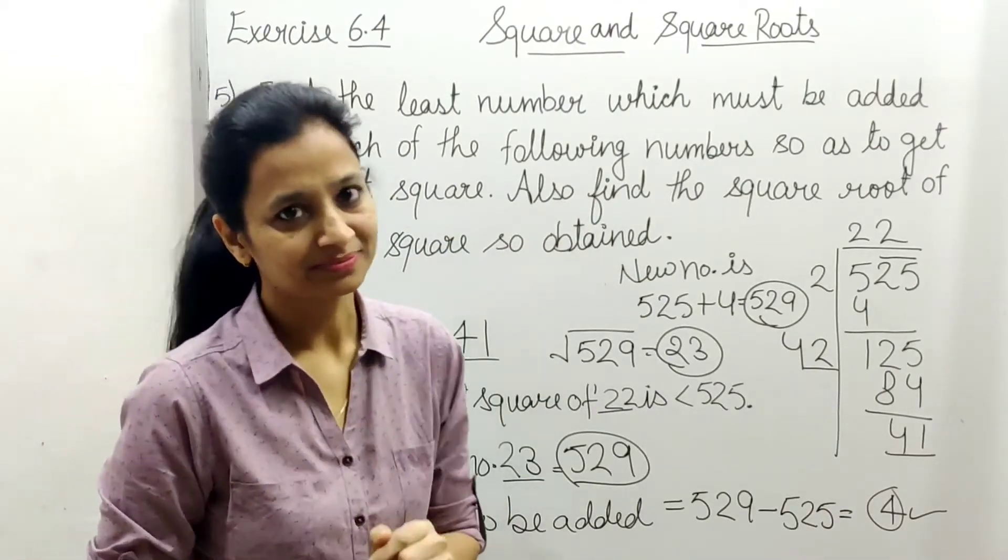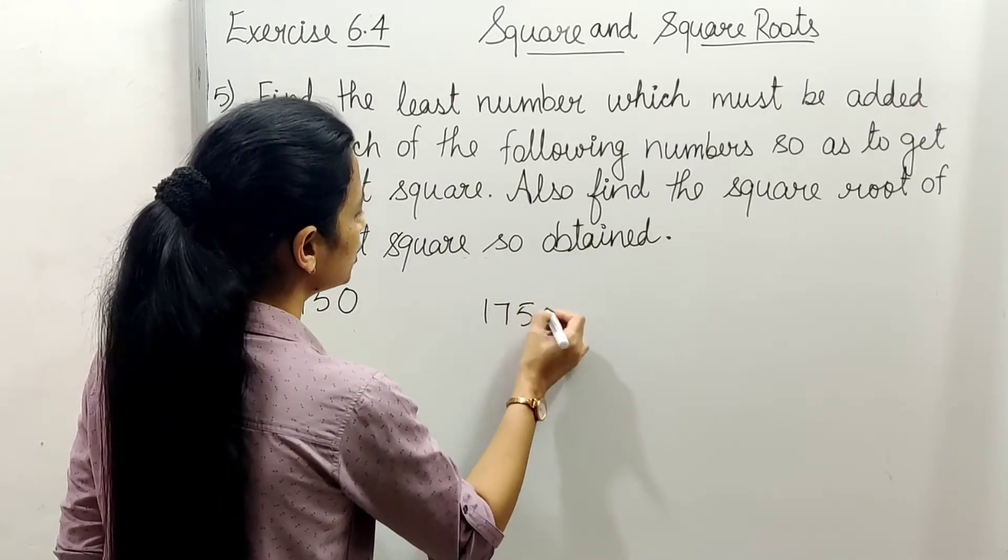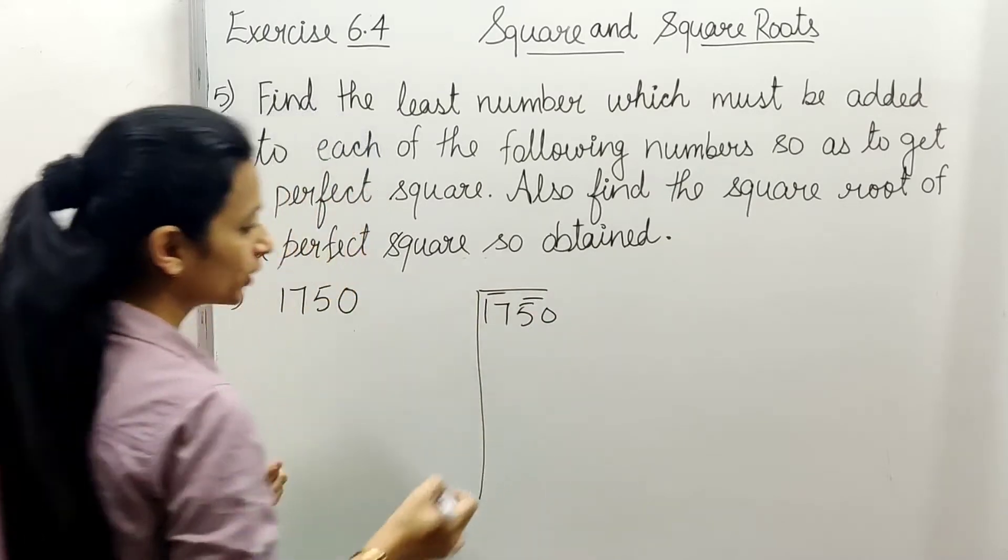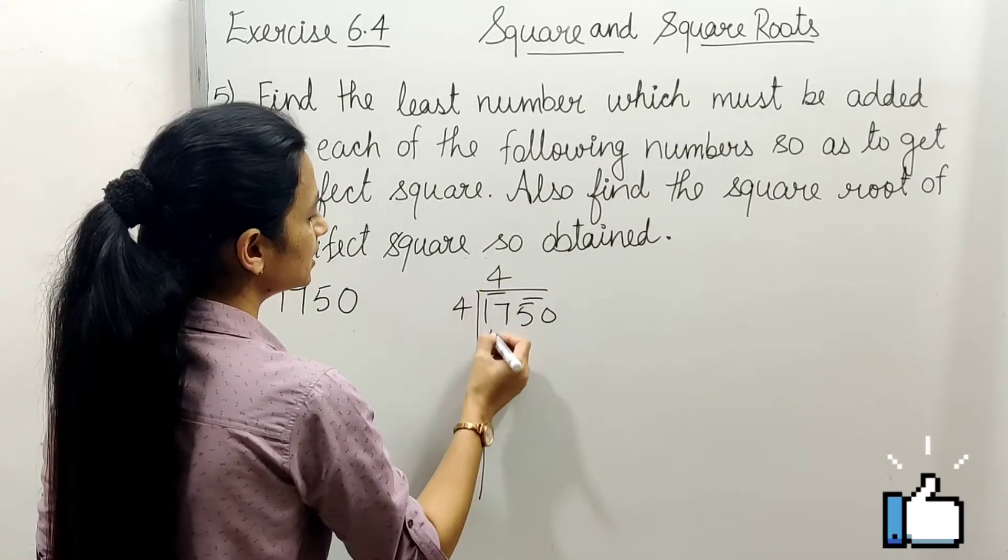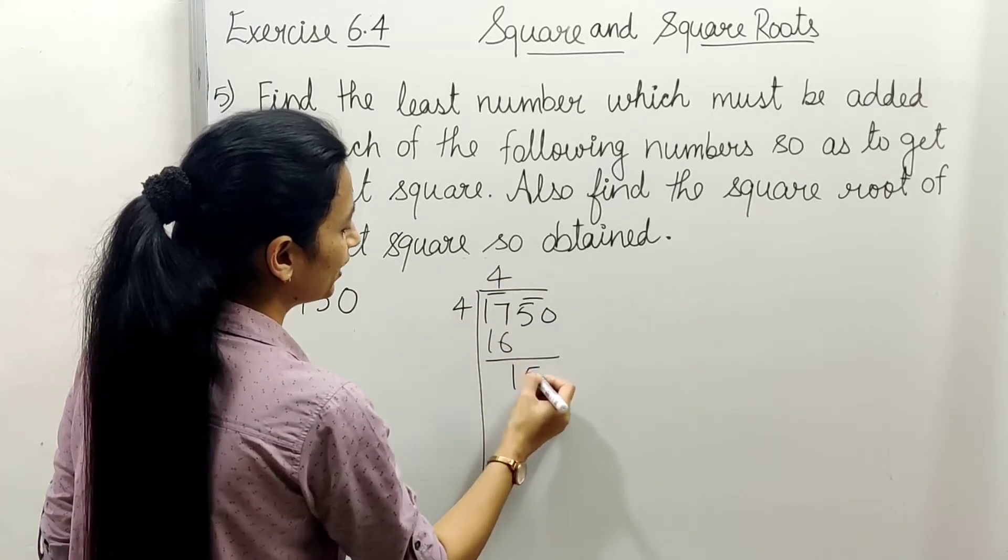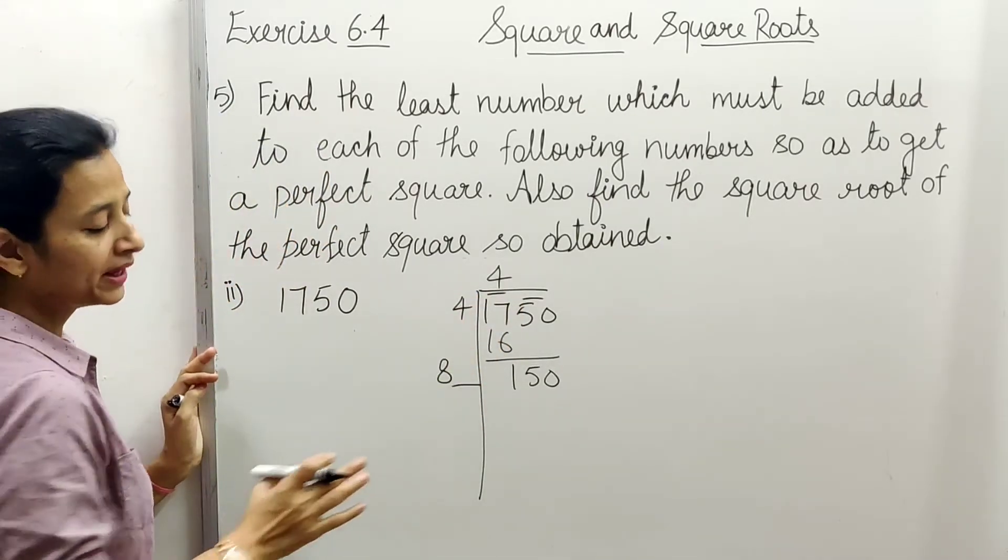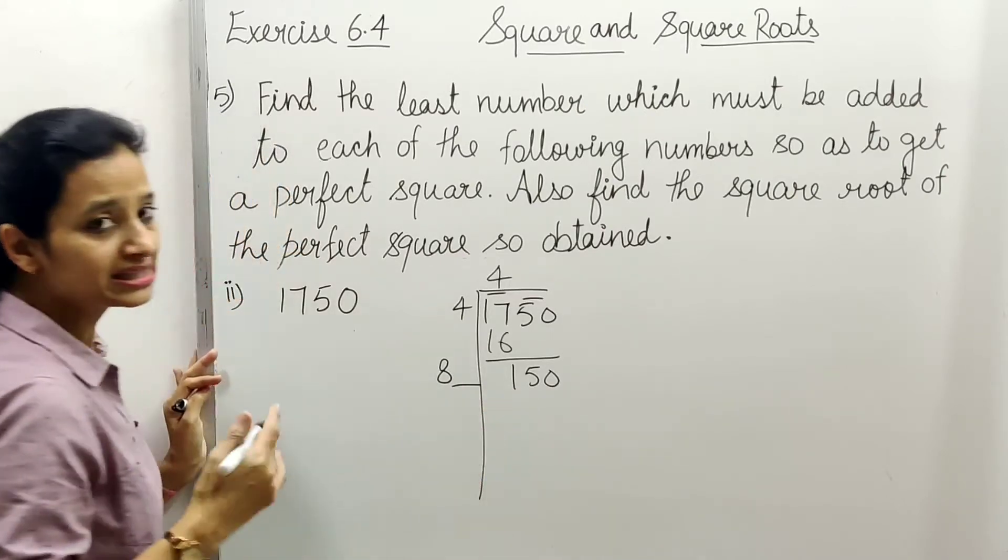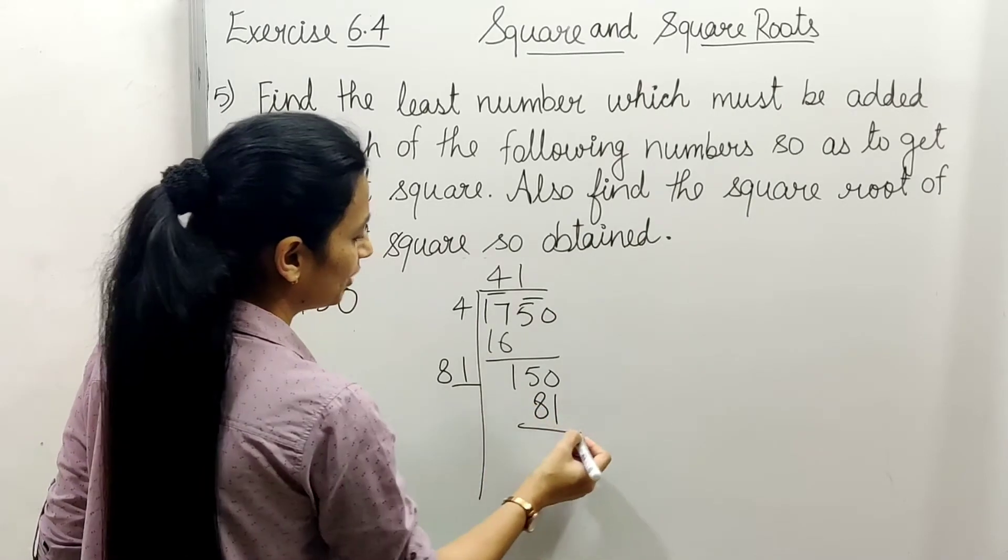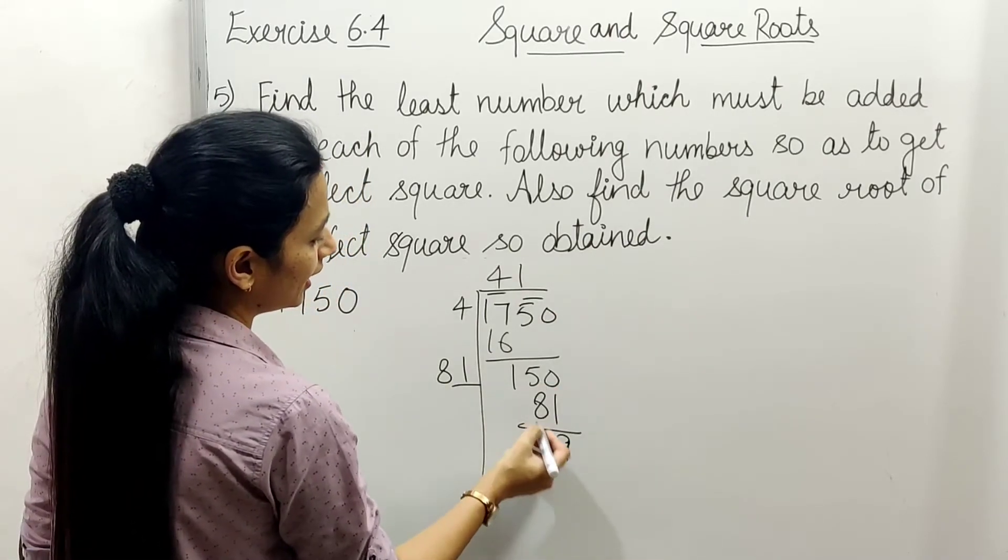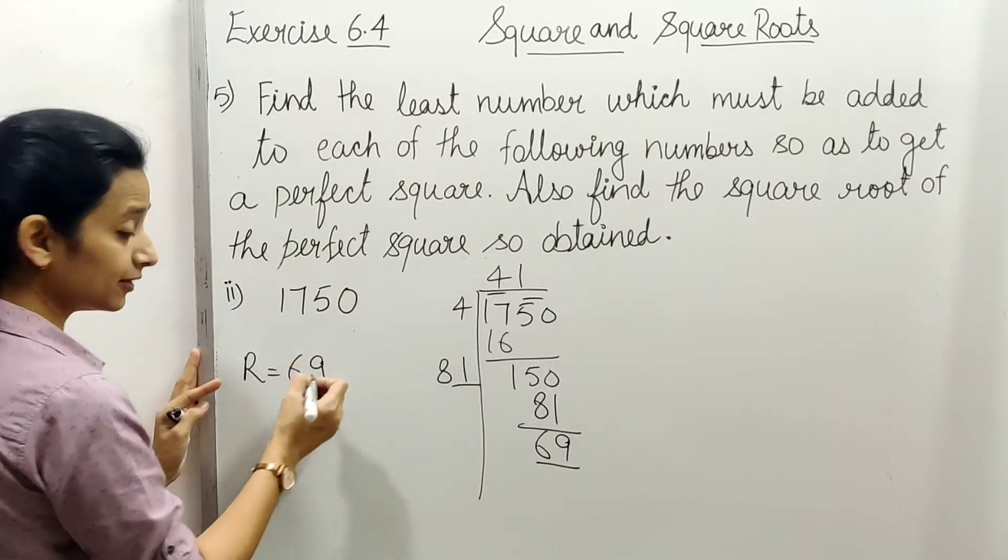Now next, 1750. Let's find its square root: 1750, first pairing. How many times? 4, 4×1=1, minus, 350. New divisor is 8. Let's check: 8×2=16, we can try 2 times. But 82×2=164, and 82×1=81, minus 8 is 6. Remainder we got is 69.